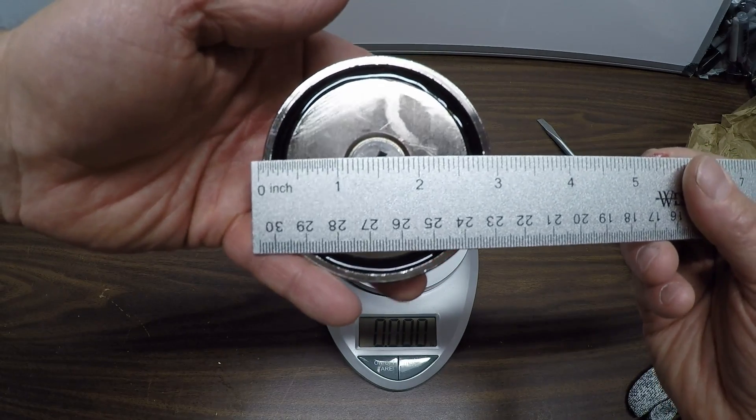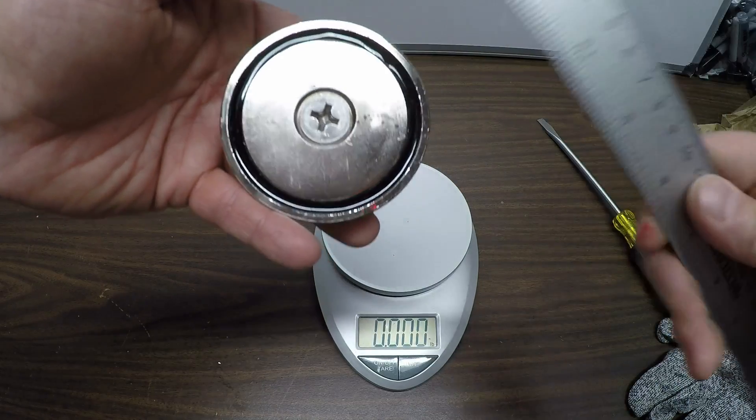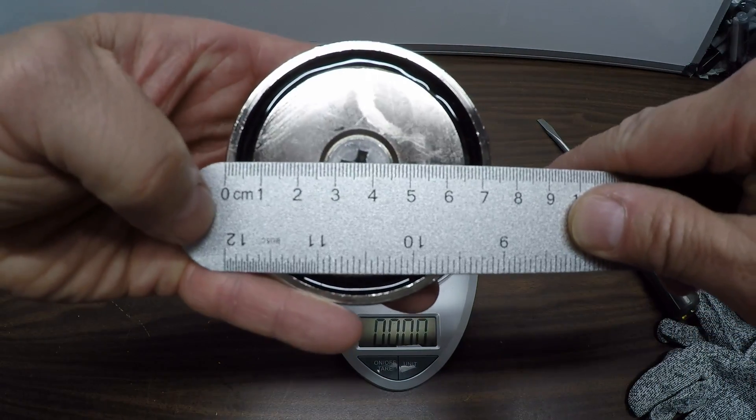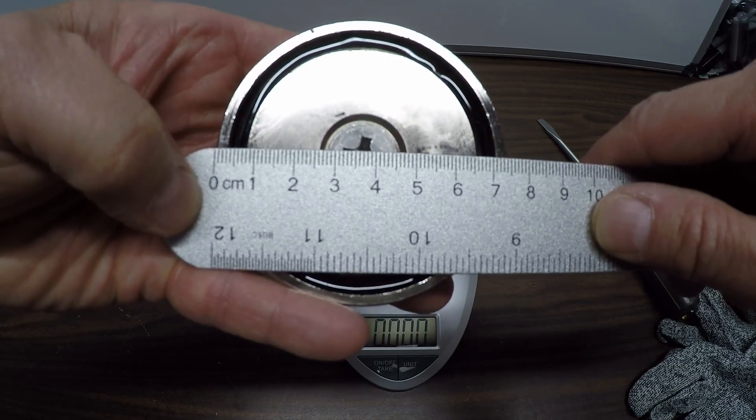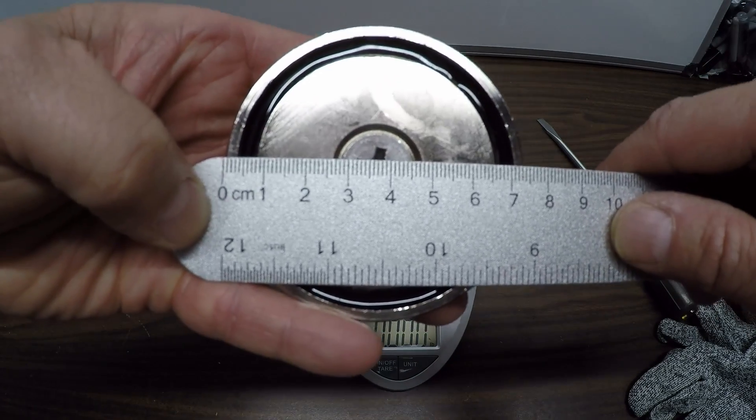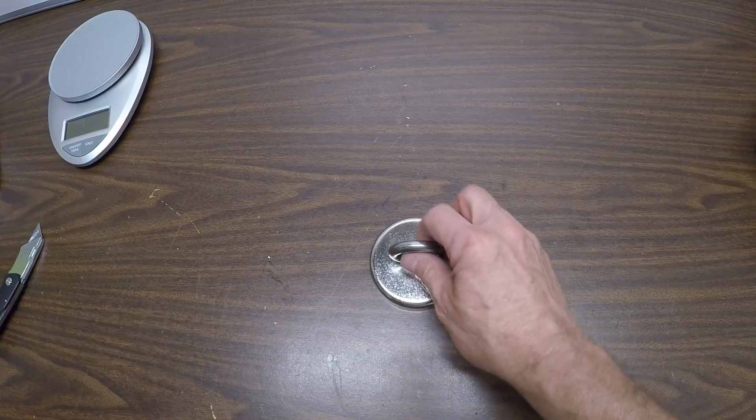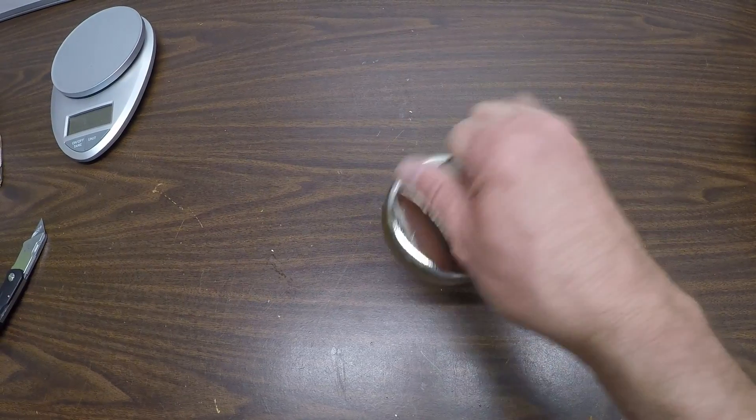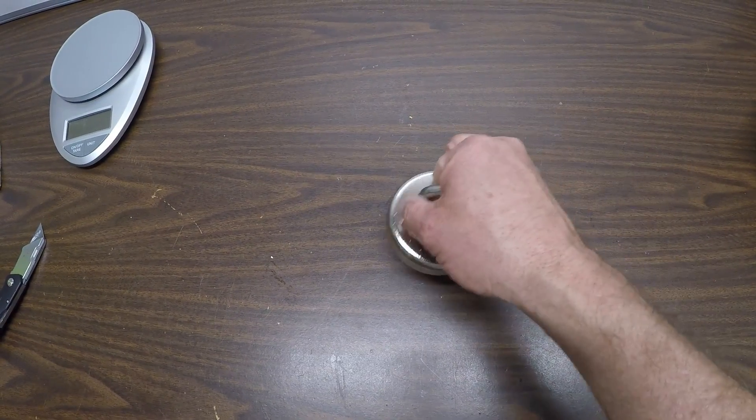So it comes in right around almost three inches, and for the folks who like the metric system that's about 75 millimeters. But I can see how these things would be really dangerous because as you put it on the table, I'm trying to make sure my skin doesn't get between the table and it goes down heavy.